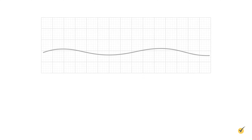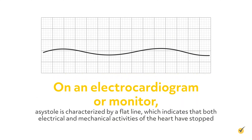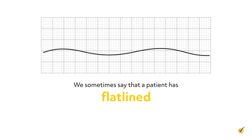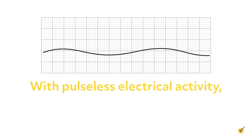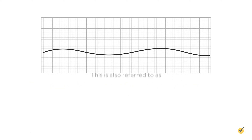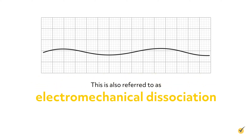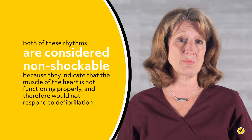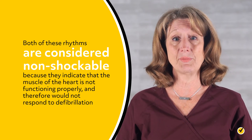On an electrocardiogram or monitor, asystole is characterized by a flatline, which indicates that both electrical and mechanical activities of the heart have stopped. With pulseless electrical activity, the tracing will show electrical activity, but the mechanical functioning of the heart is not adequate to produce a pulse. This is also referred to as electromechanical dissociation. Both of these rhythms are considered non-shockable because they indicate that the muscle of the heart is not functioning properly and therefore would not respond to defibrillation.